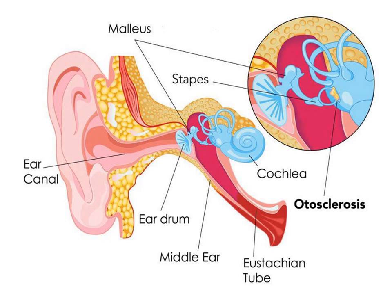The stapes region is the most commonly involved, but other parts can also be involved. Once the stapes gets fixed, the sound waves cannot be transmitted — conduction of sound cannot pass from the external to the inner ear — leading to conductive hearing loss.